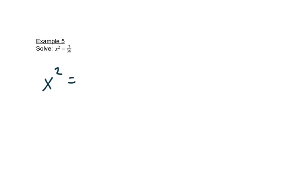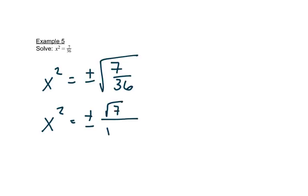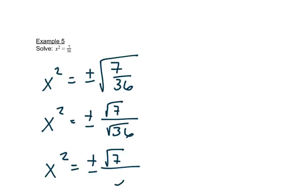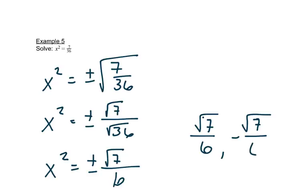In this problem, the squared term is already by itself, so we take the positive and negative square root of both sides. This is like the last chapter — we take the square root of the numerator and denominator separately. We can't simplify √7, so it stays under the radical, but √36 = 6, so it comes out. Our two answers are √7/6 and −√7/6.